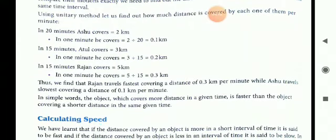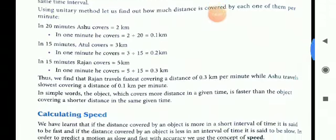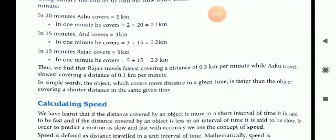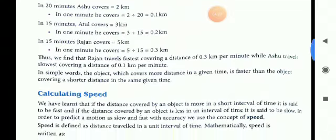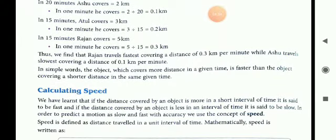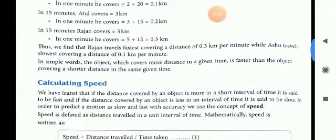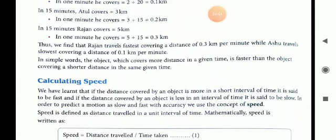So first in 20 minutes Ashu covers 2 kilometers, so in one minute find out 2 kilometers divided by 20, it is 0.1 kilometer. By Atul, 3 kilometers is covered in 15 minutes, so it is 0.2 kilometers. And by Rajan it is 5 kilometers covered in 15 minutes, so it is 0.3 kilometers.